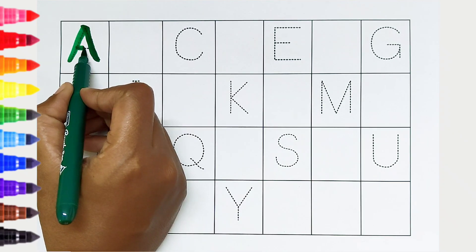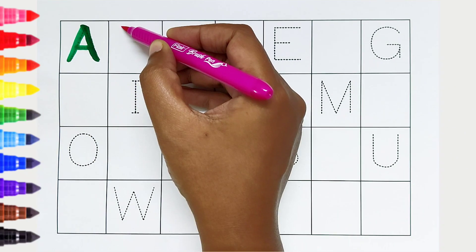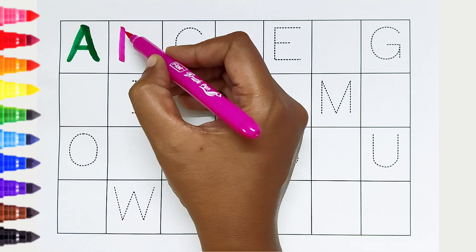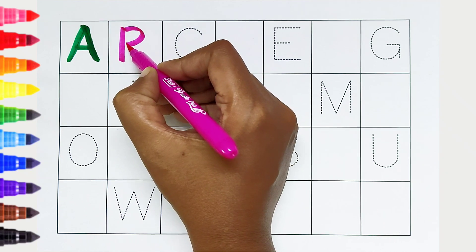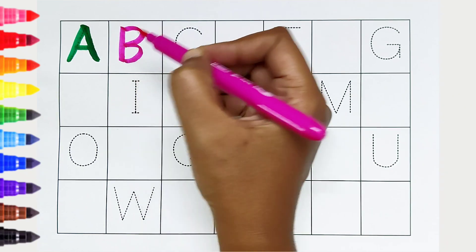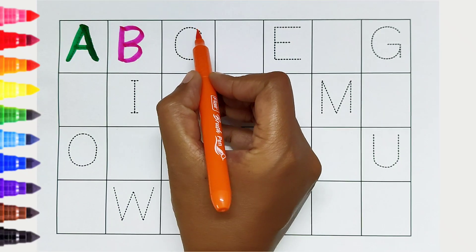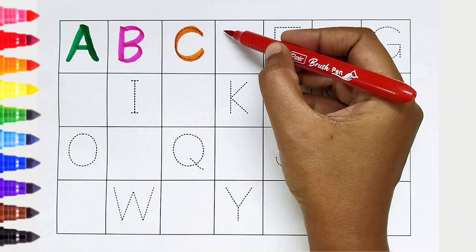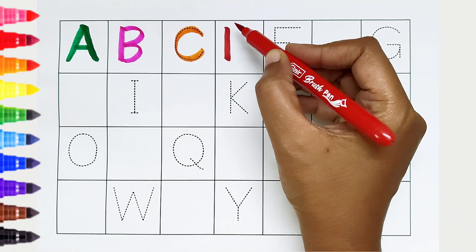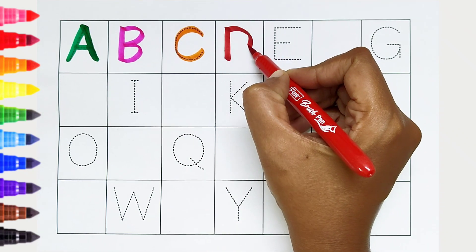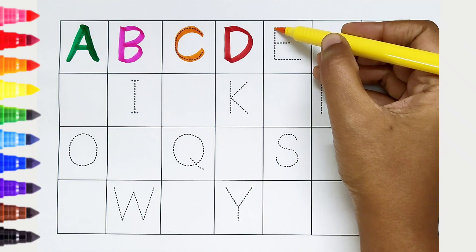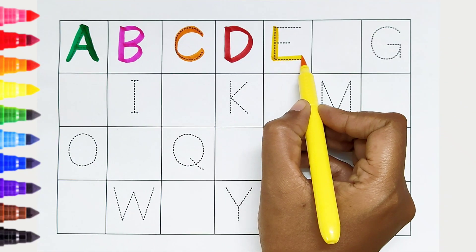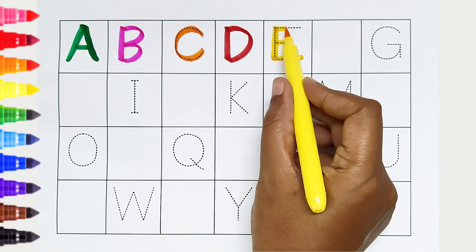A. Dark green color, A is for ant. B. Dark pink color, B is for buffalo. C. Orange color, C is for cat. D. Red color, D is for donkey. E. Yellow color, E is for eagle.